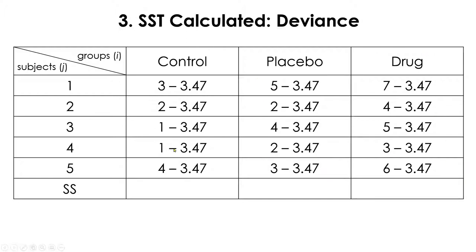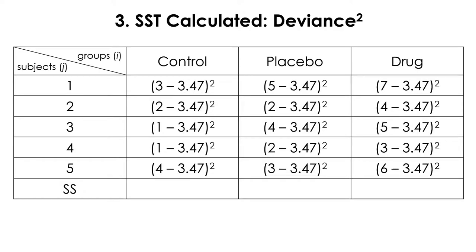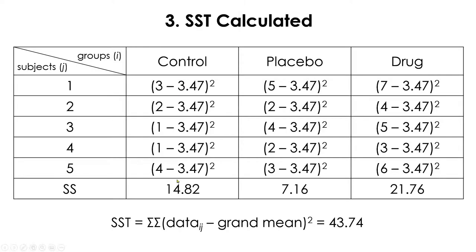To calculate SST, subtract the grand mean of 3.47 from every score — that gives the deviance between the grand mean and each individual data point. Then square each deviance, and if you add column-wise, you get the sum of squares for each group: control, placebo, and drug. Adding all these up gives the total sum of squares of 43.74.